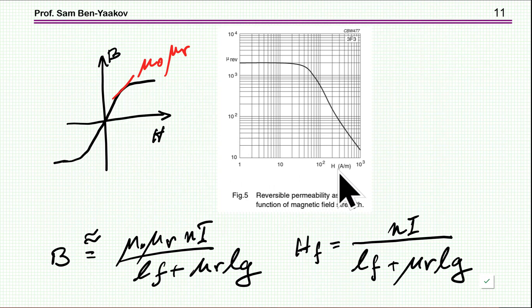If μᵣ is indeed very large, then this term is much larger than this, and then we get a high B. We'll see it in a minute in a more detailed form.